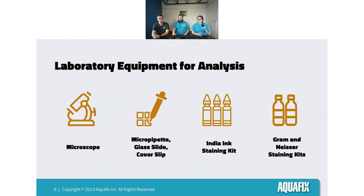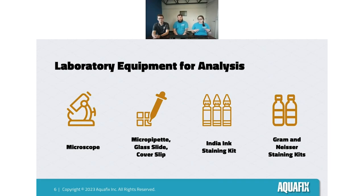For those who don't have the ability to perform microscopy but want to, the tools commonly used for analysis are a microscope, a pipette with glass slides and cover slip, as well as India ink stain and Gram and Neisser staining.